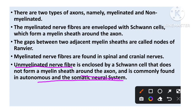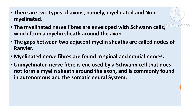Regarding axon types: myelinated axons are covered by Schwann cells forming a myelin sheet, found in spinal and cranial nerves. Non-myelinated axons are found in the autonomic and somatic neural systems. This was a detailed discussion about neurons. I hope this video will be helpful. Please subscribe, like, and share.